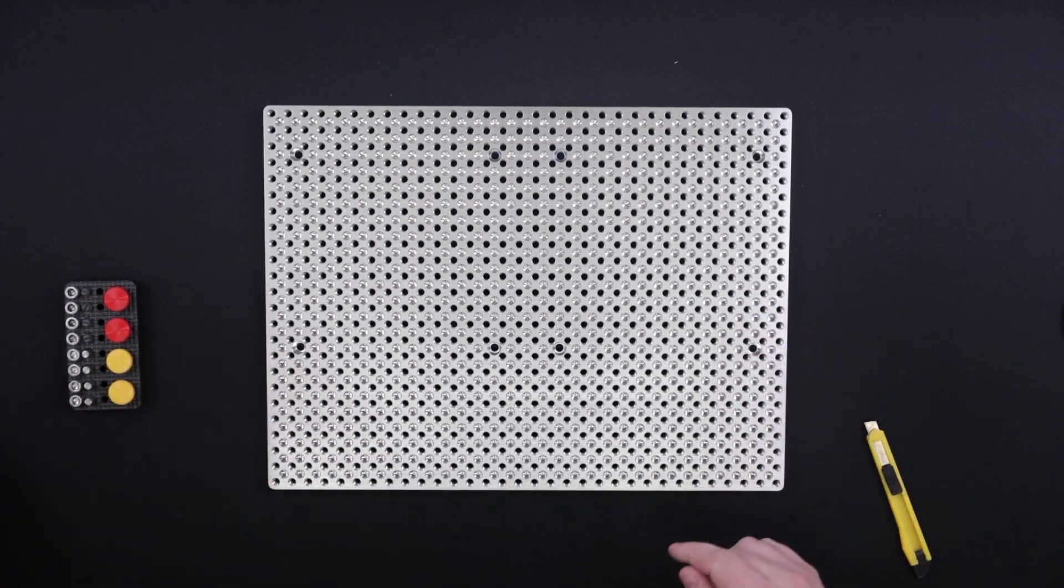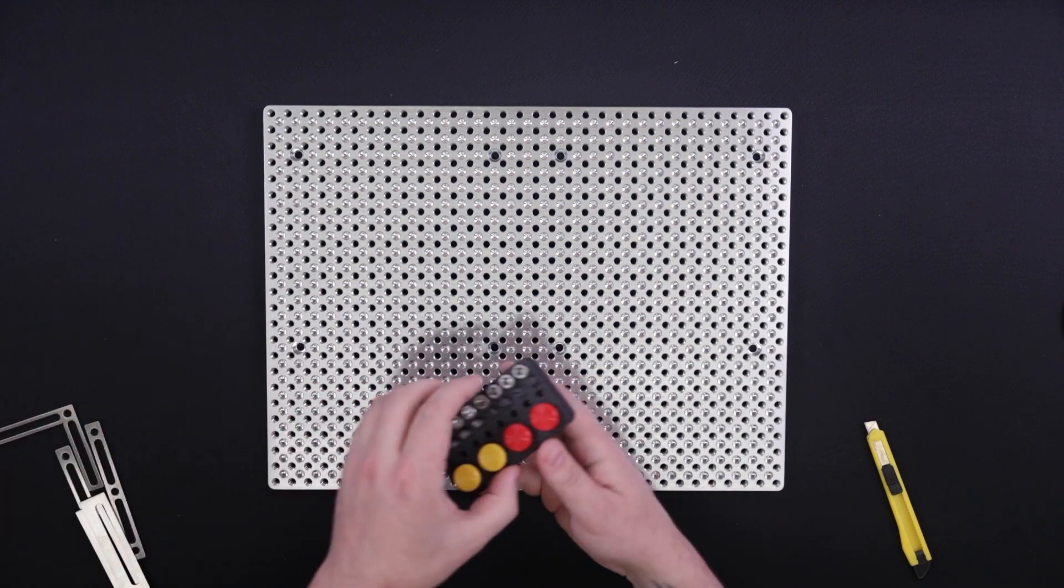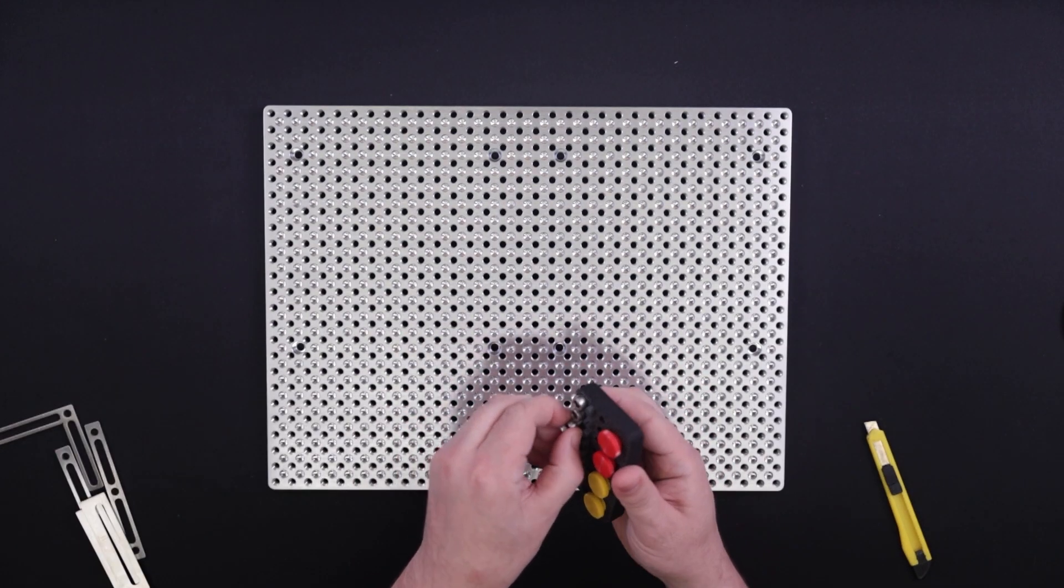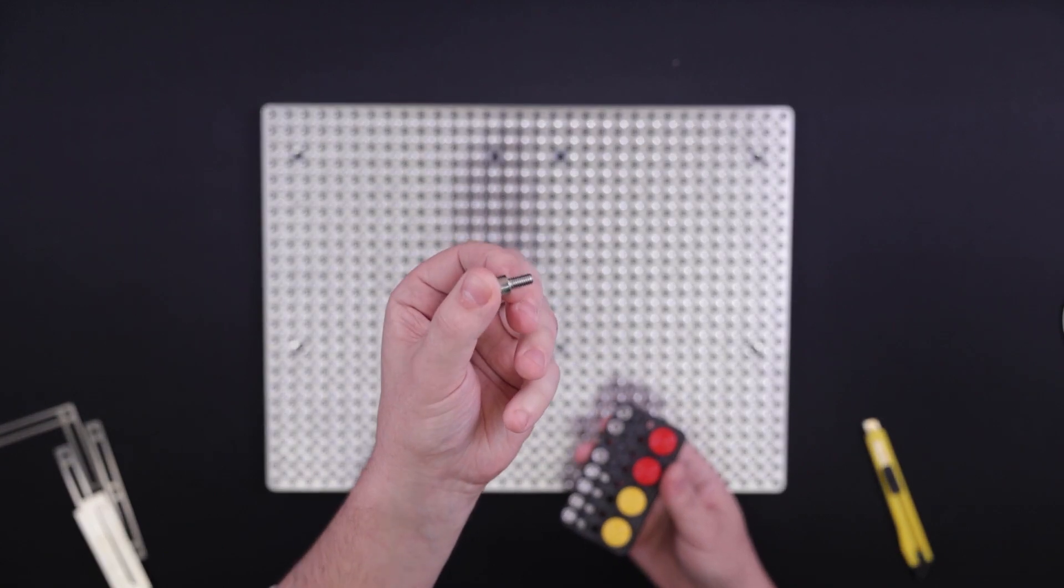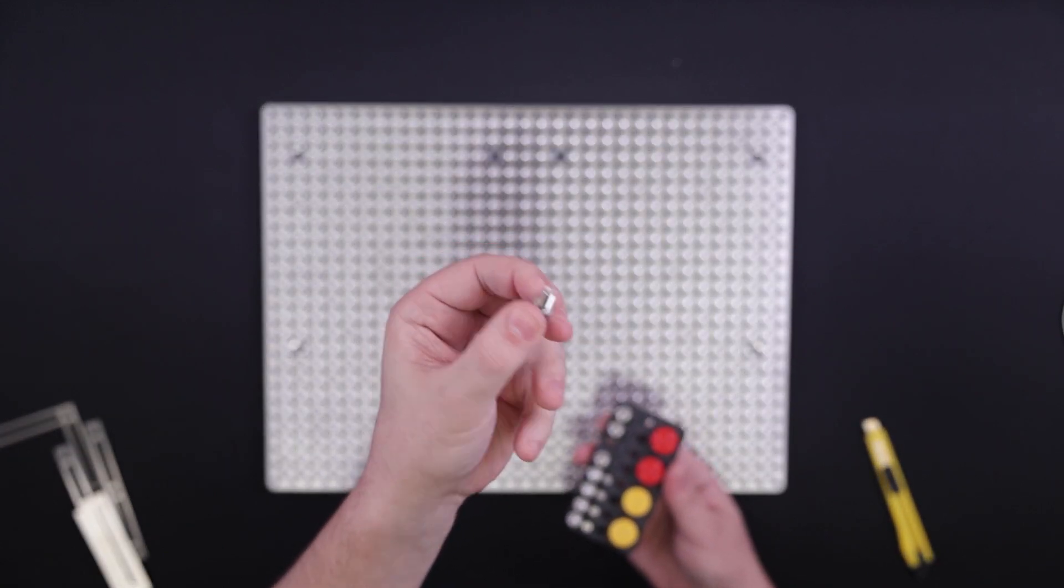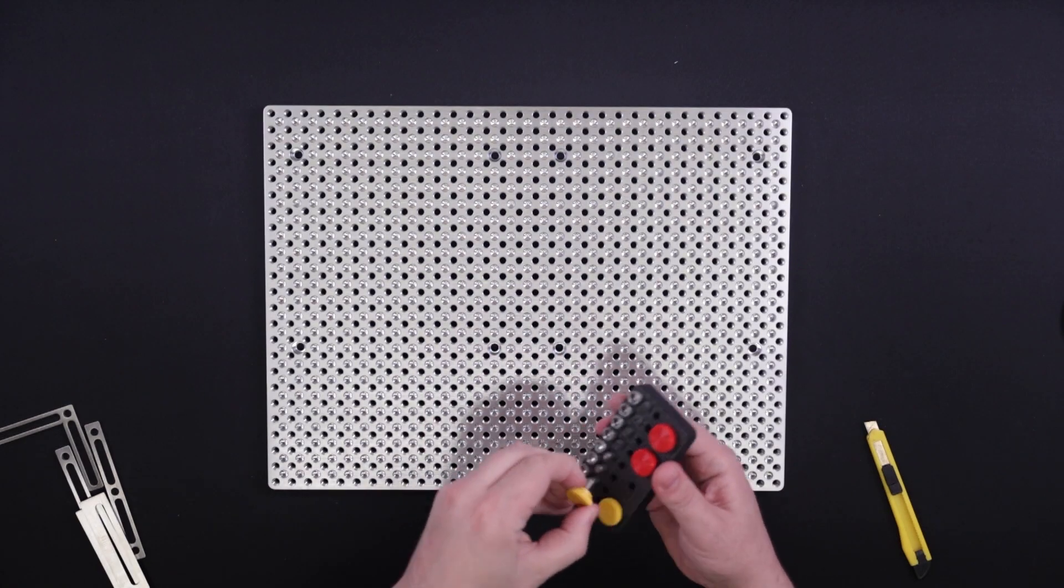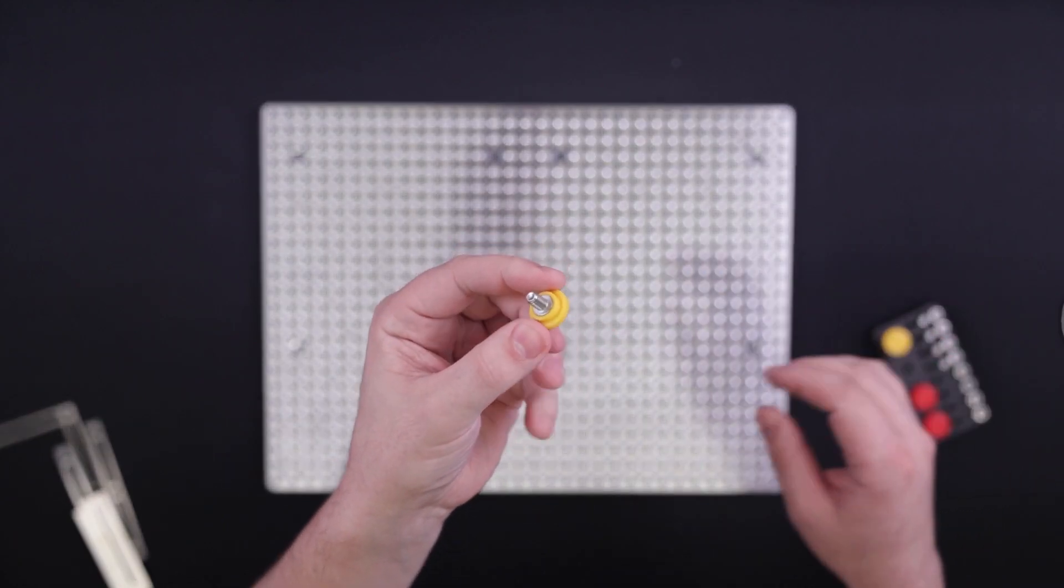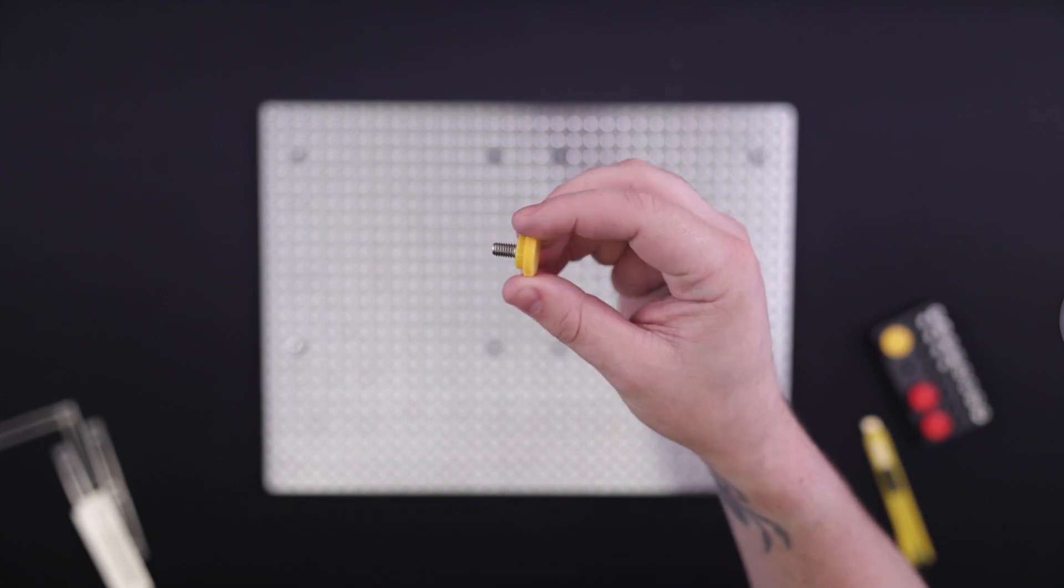And he was nice enough to send along a set of machine screws too. So we have just the normal machine screws, which we can use to bolt this down directly to our fiber laser bed, or we have thumb screws that we can use for jigging.